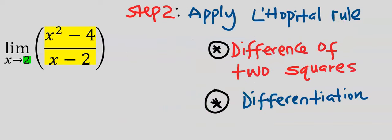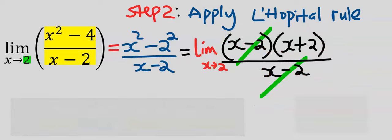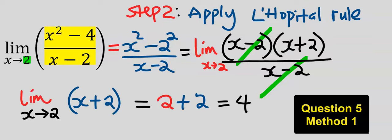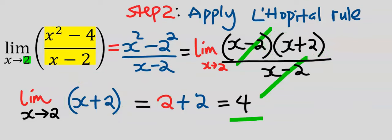Step 2: we are going to apply L'Hôpital's rule. Here we have 2 options: either to use the difference of two squares or to use differentiation. By difference of two squares, we factor and cancel terms. By taking the limit of the remaining expression, our answer is 4.